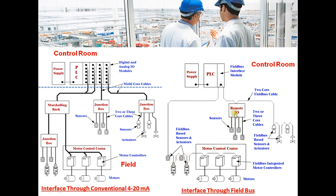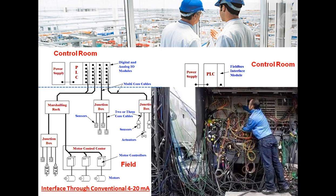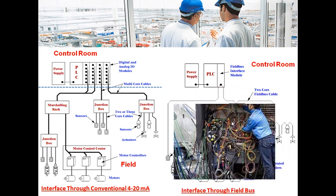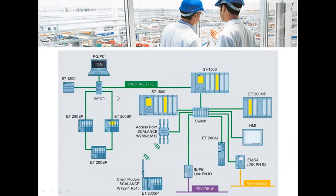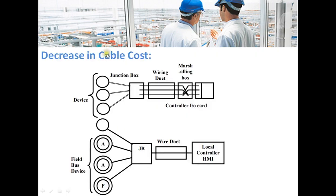Here you can also see a remote I/O where sensors are connected in star topology. Fieldbus removes this wiring chaos as the number of wires is reduced. As the number of field devices increases in a 4-20mA network, the wiring chaos problem grows. This is another example of a fieldbus network where Profinet is used — devices are connected in star topology, with all HMI panels, remote I/Os, and drives connected to a switch.